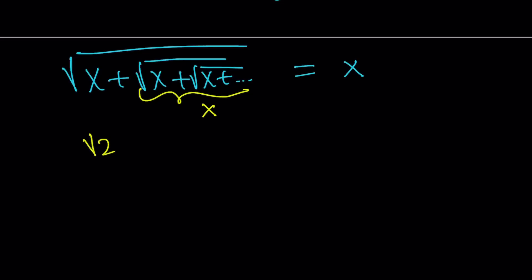Notice that this is the same thing as the right-hand side or the left-hand side, which is x. From here, we get square root of 2x equals x, which means x squared equals 2x, and x equals 0, or x equals 2. But x equals 0, obviously, is not going to work.